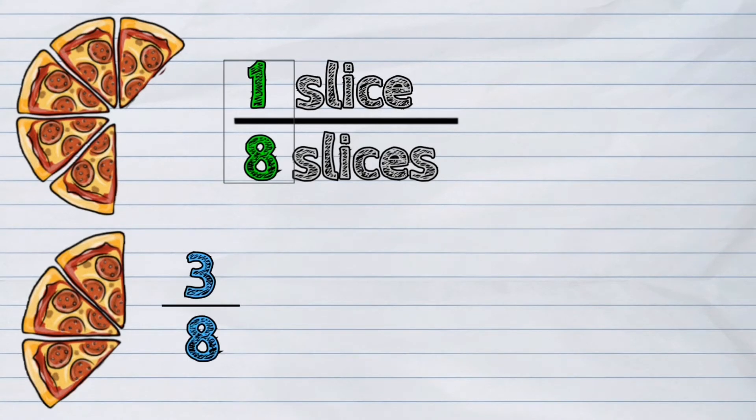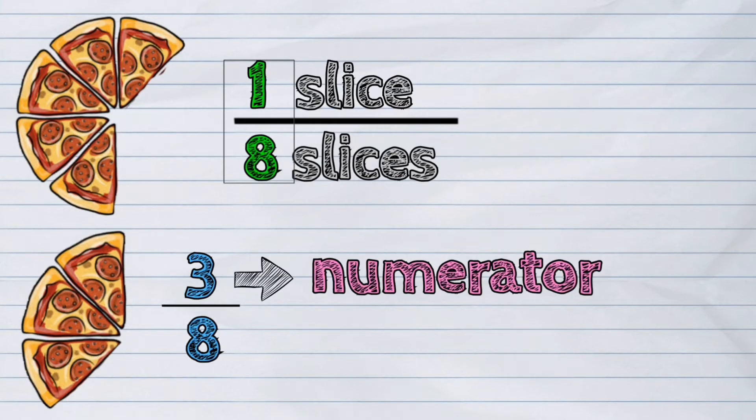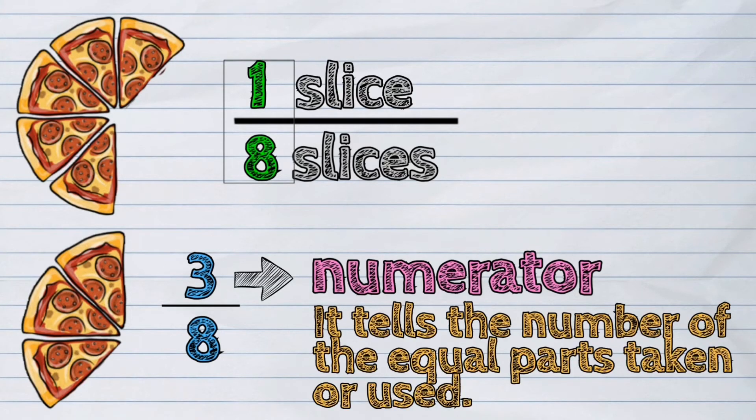Three here is what we call the numerator. It tells the number of the equal parts taken or used.